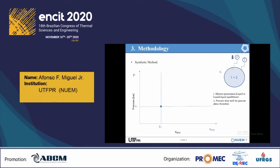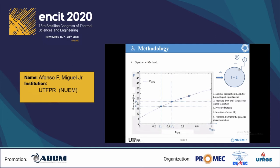After this bubble point acquisition, the pressure would be increased once again and, later on, more SF6 would be introduced inside the cell in order to change its global composition. Once again, the pressure would be dropped until the bubble point of the mixture was detected. The procedure would be repeated time and time again in order to create a whole bubble line for a PX diagram.